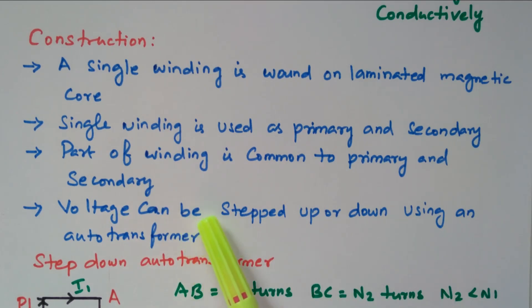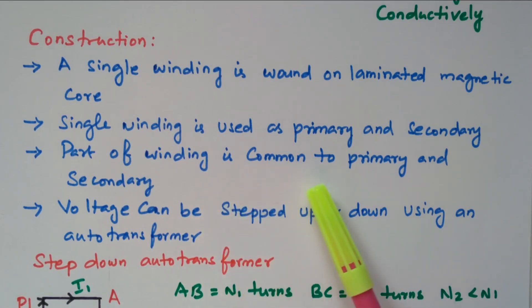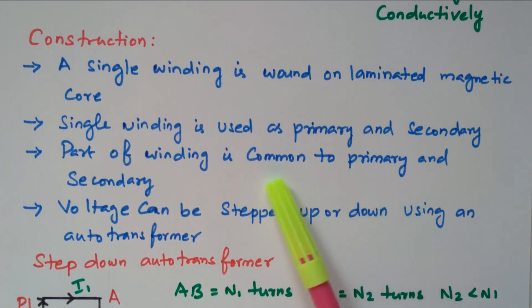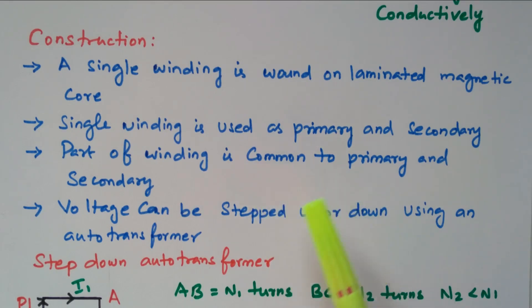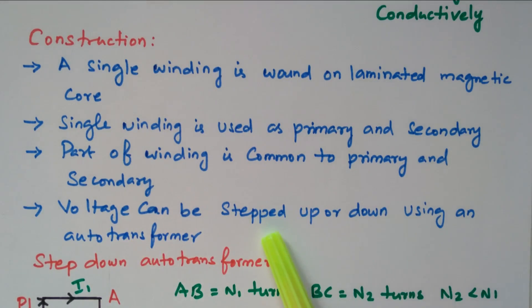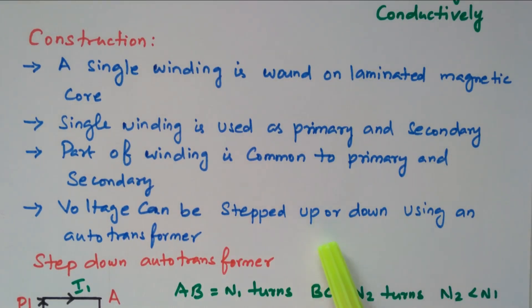Either the entire winding or part of it may be used as primary or secondary, with the commonly shared portion serving both. Voltage can be stepped up or stepped down using the auto transformer. It is commonly used as a voltage regulator when starting motors.